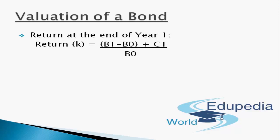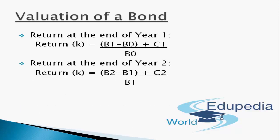Rearranging, we can say B0 equals C1 plus B1 divided by 1 plus K. We interpret this equation as: the value of the bond today is the present value of future inflows from that bond. Assuming the bond has 2 years maturity, if we buy it at B1 after year one and sell at B2 after year two, the return in the second year is B2 minus B1 plus C2, divided by B1.